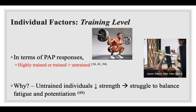Researchers found that highly trained or trained individuals have better abilities in producing greater PAP responses when compared to untrained individuals. Often, untrained subjects weren't even able to produce a response at all, unable to improve their performances. The reason lies in the fact that untrained individuals typically possess less strength, meaning they struggle to balance fatigue and potentiation. When an untrained individual completes the high-load conditioning activity, they'll typically fatigue and be unable to potentiate. Whereas trained and stronger individuals are more fatigue-resistant and therefore more capable of exhibiting PAP.